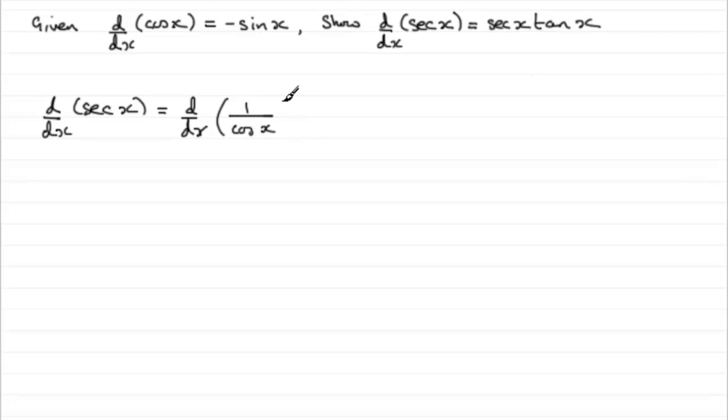To differentiate something like this, we've got a fraction, but the top isn't a function of x, so it's a bit pointless using the quotient rule. What I'm going to do is rewrite this as cos x all to power minus 1. So we can differentiate with respect to x cos x all to the power minus 1. Notice I've used square brackets here.